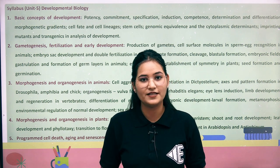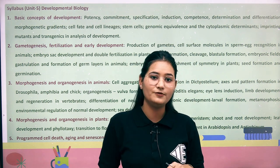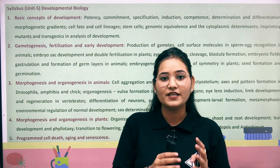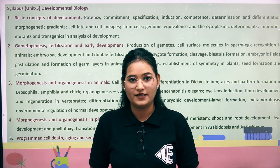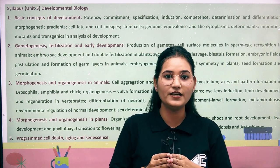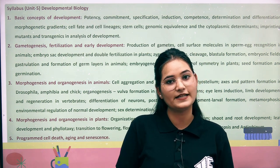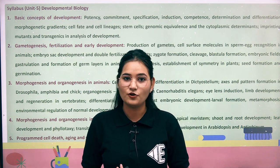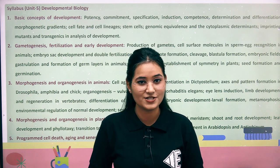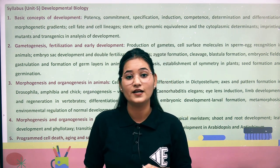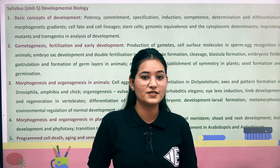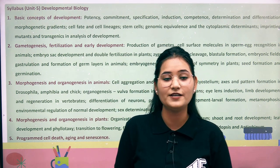If you have seen my previous video, I explained the CSIR exam structure. In CSIR, there are two types of units: first are common units and second are other units. Common units include Biochemistry, Cellular Organization and Cell Communication, and Molecular Biology — these are units you study across all streams.